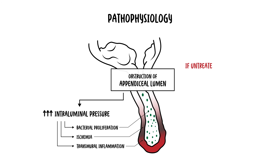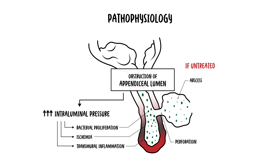If untreated, this process of inflammation and ischemia can result in perforation, abscess formation due to bacterial overgrowth, or peritonitis.